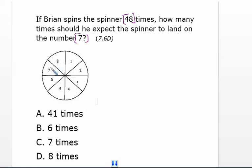So the probability that this spinner will land on the number seven is one eighth.